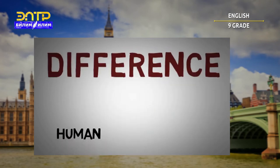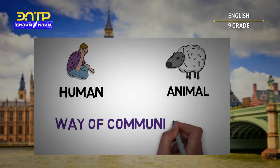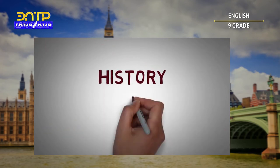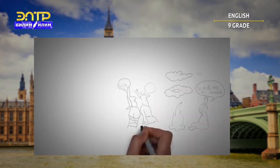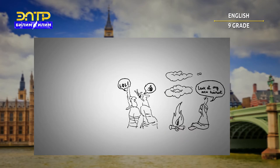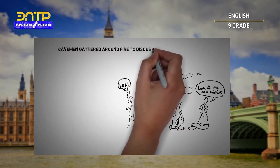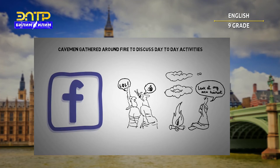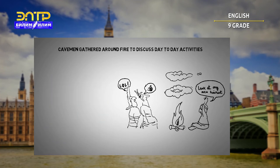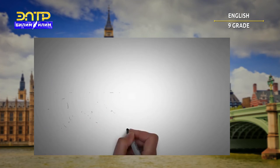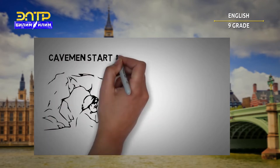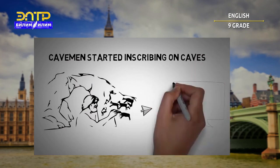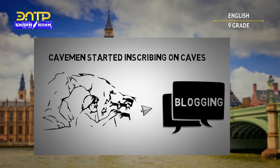What differentiates us humans from animals is the way we communicate with each other. Here we will show you a brief history of how the communication system evolved. The whole journey of communication started with the caveman. The cavemen used to gather around fire to discuss their day-to-day activities — we can compare this to modern-day social networking sites such as Facebook. One day they decided to record their activities or knowledge and started inscribing on cave walls, which we can compare to modern-day blogging.